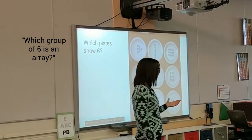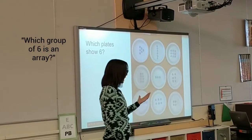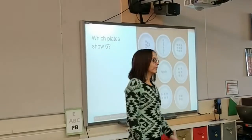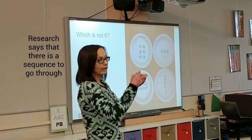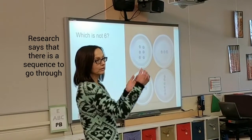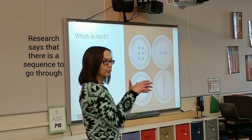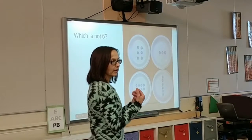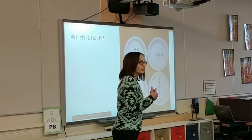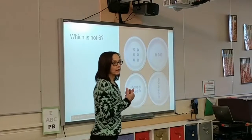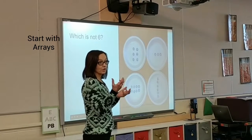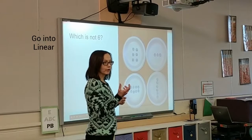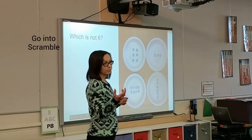You would want them to go: which plates are showing me a group of six as an array? The research says that there is a sequencing of how you need to go through that order. You're supposed to start with arrays, go into linear, go into dice, and then go into scrambled.